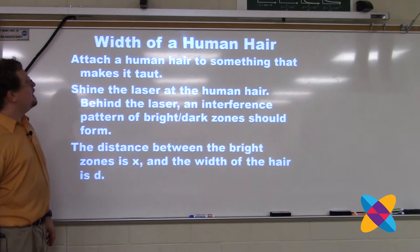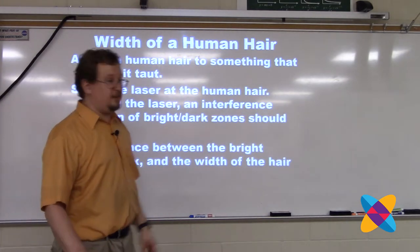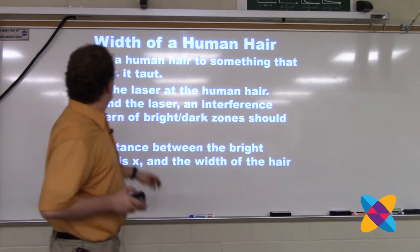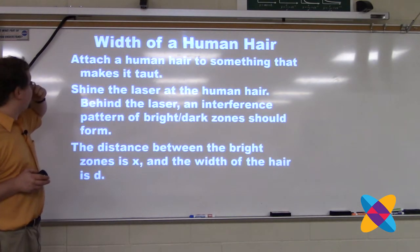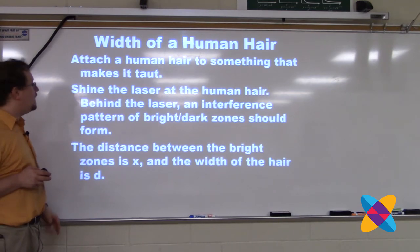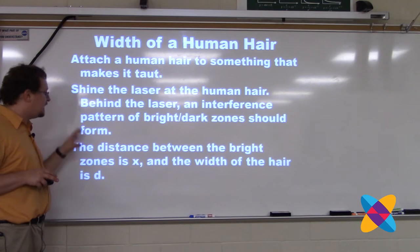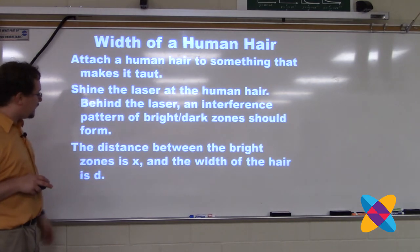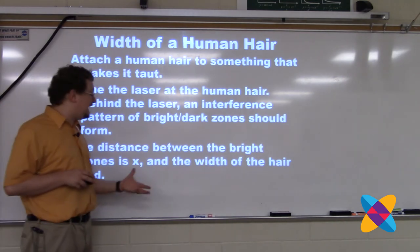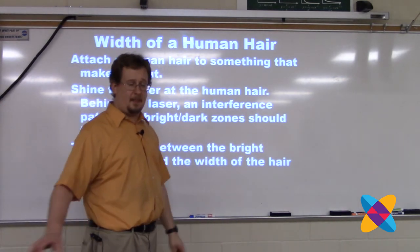The last experiment is measuring the width of a human hair. You stretch a human hair vertically and shoot a laser at it. Attach the hair to something that keeps it taut, shine the laser on it, and behind the hair you will see an interference pattern of bright and dark zones. The distance between bright zones is x, and the width of the human hair is d — the size of whatever is causing the diffraction.